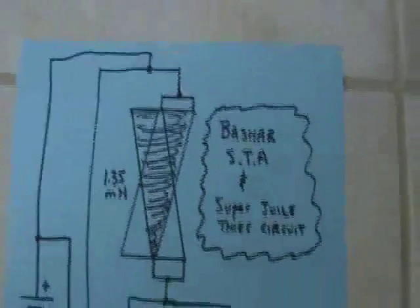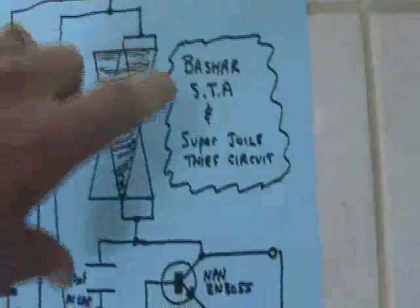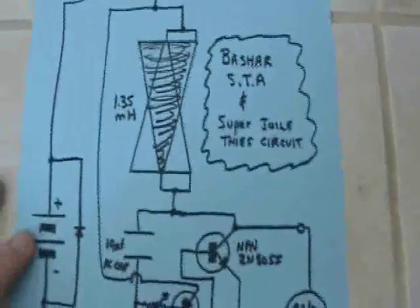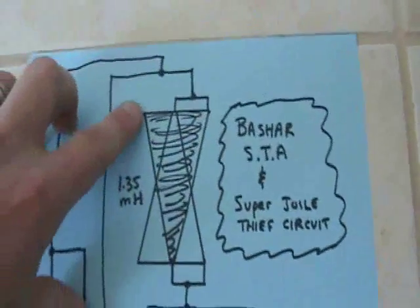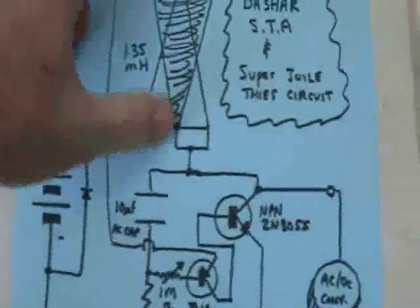I have a new circuit that I've been experimenting with. It's a modification of the one I showed in the previous video. It's a super jewel thief circuit with the Bashar STA as the inductor.